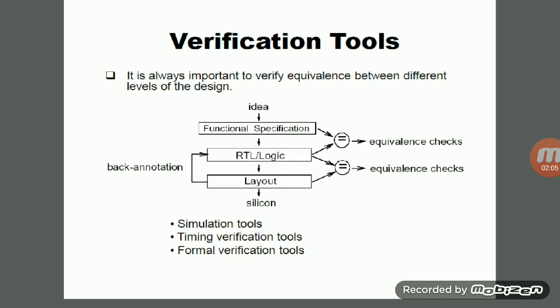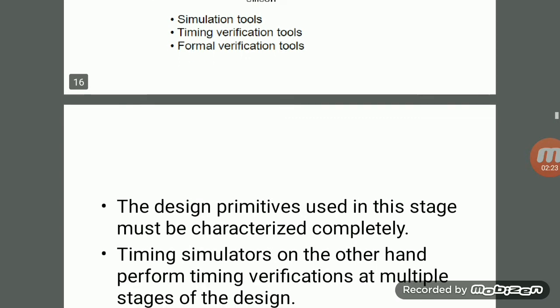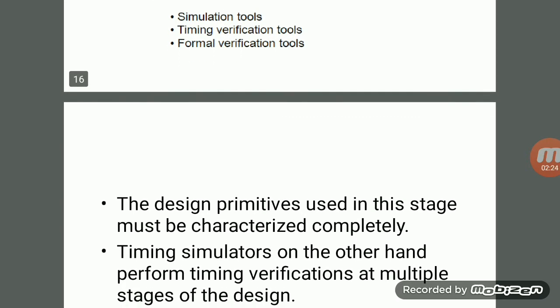Once you check the functional specification equivalence and RTL and layout are both equal, then we can go for fabrication. In case of verification tools, we have some reference results and some current results. Both are compared as shown in the figure. Once both are equal, we proceed to implementation — using simulation tools, timing verification tools, and formal verification tools.